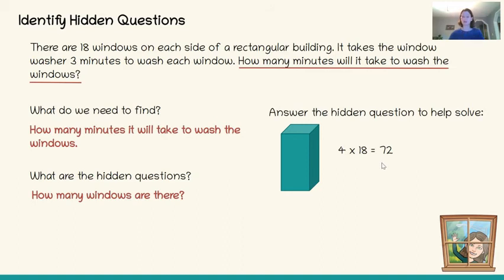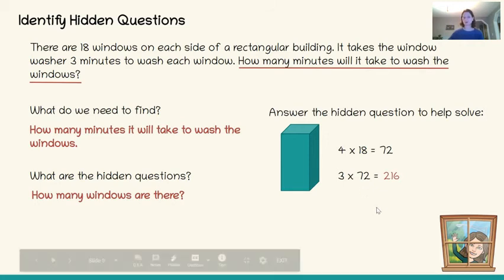Now I need to use that information from my hidden question to solve the final problem: how many minutes will it take to wash the windows? I know there are 72 windows and it takes three minutes to wash each window. 3 times 72 equals 216. So it will take 216 minutes to wash the windows. But I had to figure out the hidden question and solve it before I could solve this word problem.